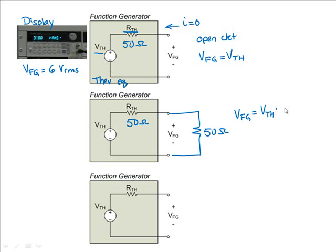We can use voltage divider to compute that the output voltage would be exactly one-half the Thevenin equivalent voltage.